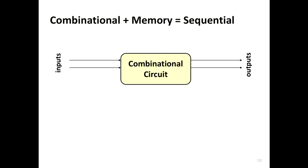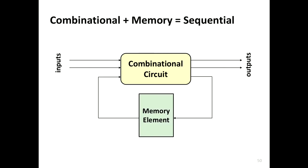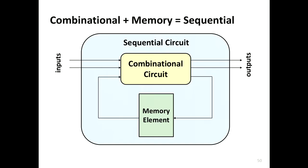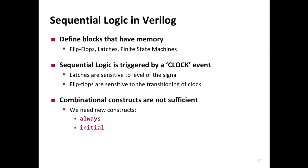A quick recap: combinational circuits take a bunch of inputs and produce outputs based on some logic design — they have no memory. When you want to introduce sequential logic, you introduce a memory element; you have to remember a certain state. So in some sense, a sequential circuit is a combination of the combinational circuit plus the memory element. Today we will see how to design in Verilog these different sequential circuits. We will start with how to define blocks that have memories — flip-flops, latches, finite state machines, and then how to implement these elements in Verilog.